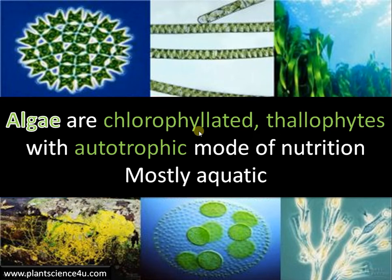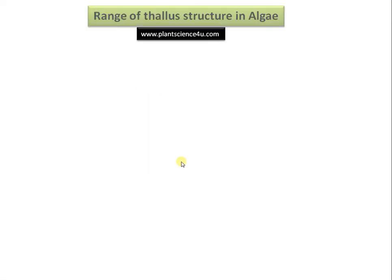Algae are chlorophyllated thallophytes with autotrophic mode of nutrition. Majority are aquatic. They are thallophytes as they don't have true stem, root, or leaves. They are autotrophic, they are photosynthetic, and they are the major primary producers on the planet, accounting for more than 60 percent of primary productivity.